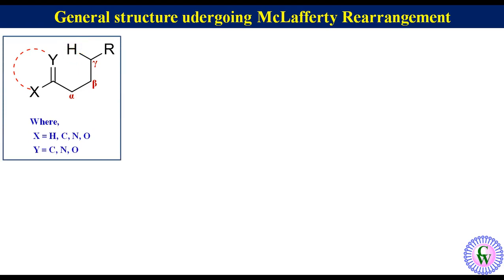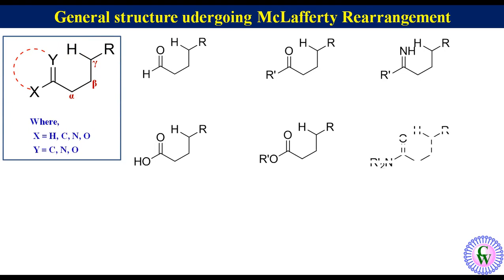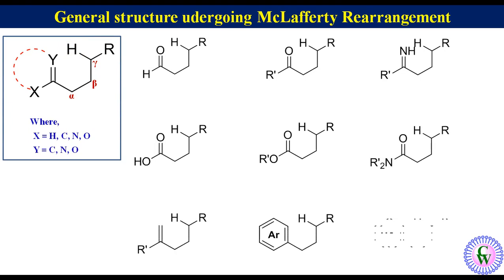Thus, these compounds may be gamma hydrogen-containing aldehydes, ketones, imines, carboxylic acids, esters, amides, alkenes, alkyl-arenes, alkyl-hetero-arenes, etc.